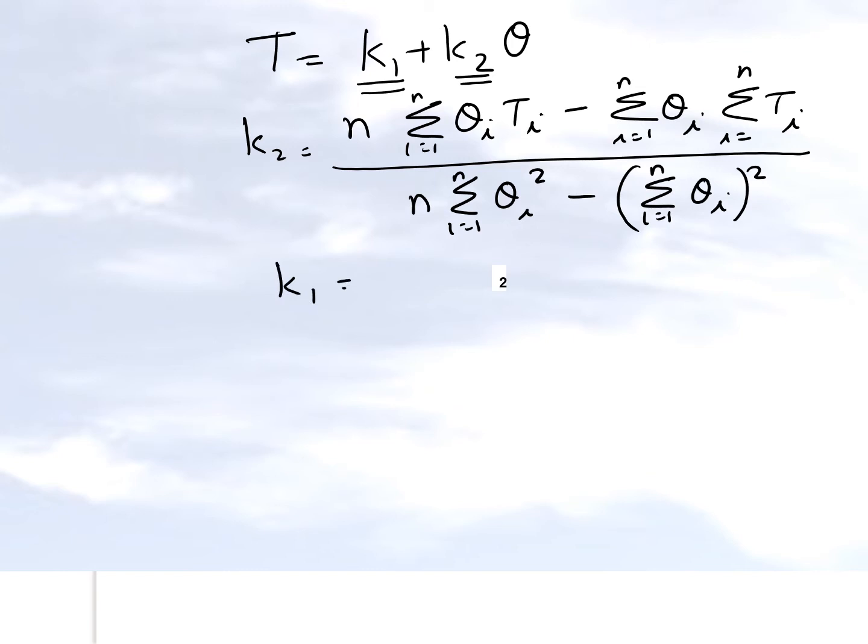k1 is nothing but the average value of t bar minus k2 times the average value of theta bar. So the bottom line is that we need to find out this summation, we need to find this summation and this one and this one and we are done.